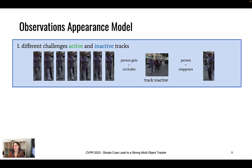For the appearance model we have several observations. The first observation is that we have different challenges while matching active and inactive tracks based on appearance cues. Active tracks are those that got a detection assigned in the last time step, while inactive tracks are those that did not — meaning they belong to an ID that is currently occluded. In the visualization, we can see that the lady in the blue jacket gets occluded over time, and her visual appearance cues at last appearance are very similar to her first appearance after occlusion. In contrast, the lady in the purple jacket has very similar appearance features over the whole time.